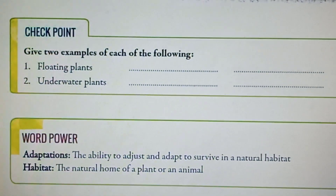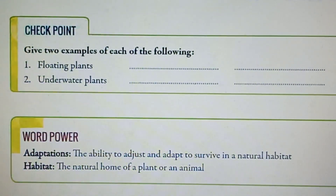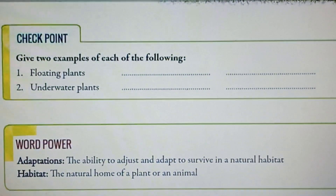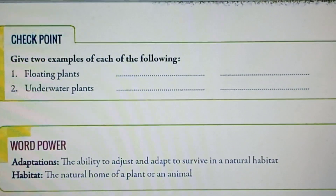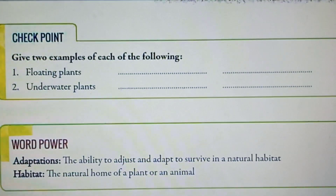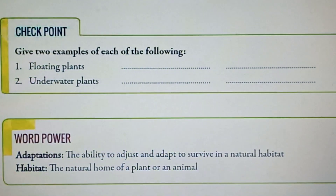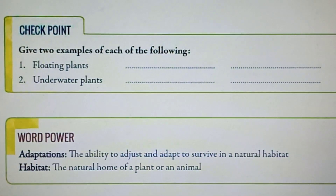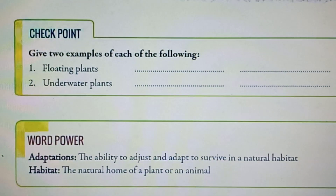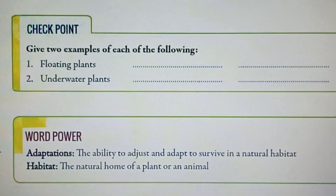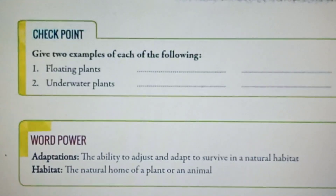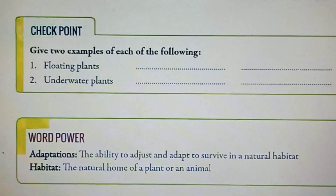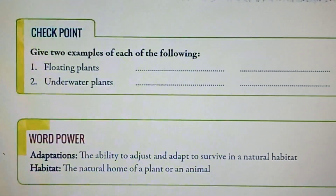Next one is word power. Here two words are defined: number 1, adaptations, and number 2, habitat. Whatever is written in the book, you have to write the same thing in your copy for both adaptations and habitat, defining them the same way as done in the book. But your heading should be: define the following terms.